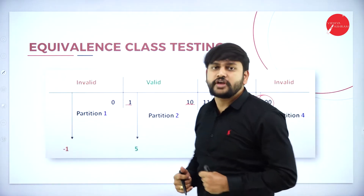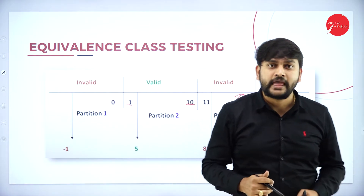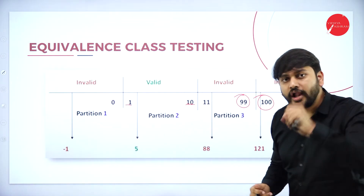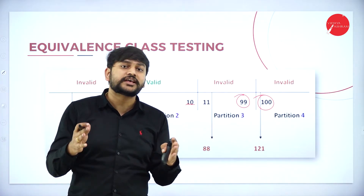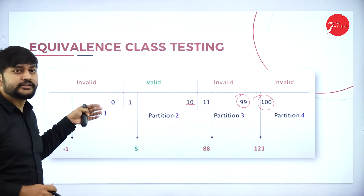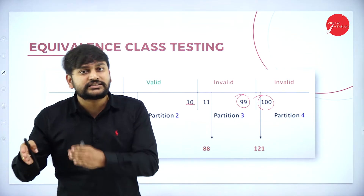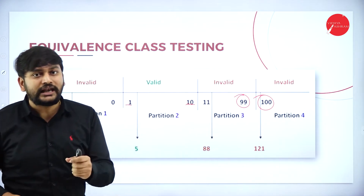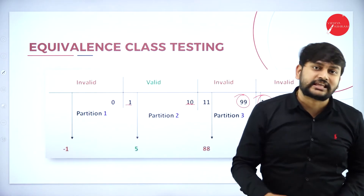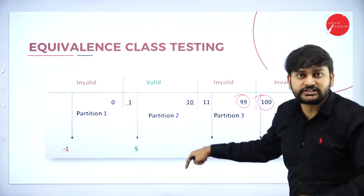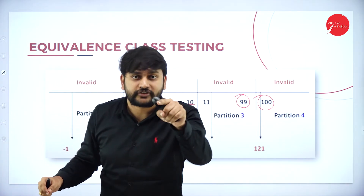If any one number fails the test condition, then all numbers in that partition will fail. Why not test each and every number? If I start testing each and every number, the number of test cases will be more and it is more time-consuming. To solve this problem, we implement equivalence class testing. I divide input into valid classes and invalid classes, then take values from both classes and start testing.